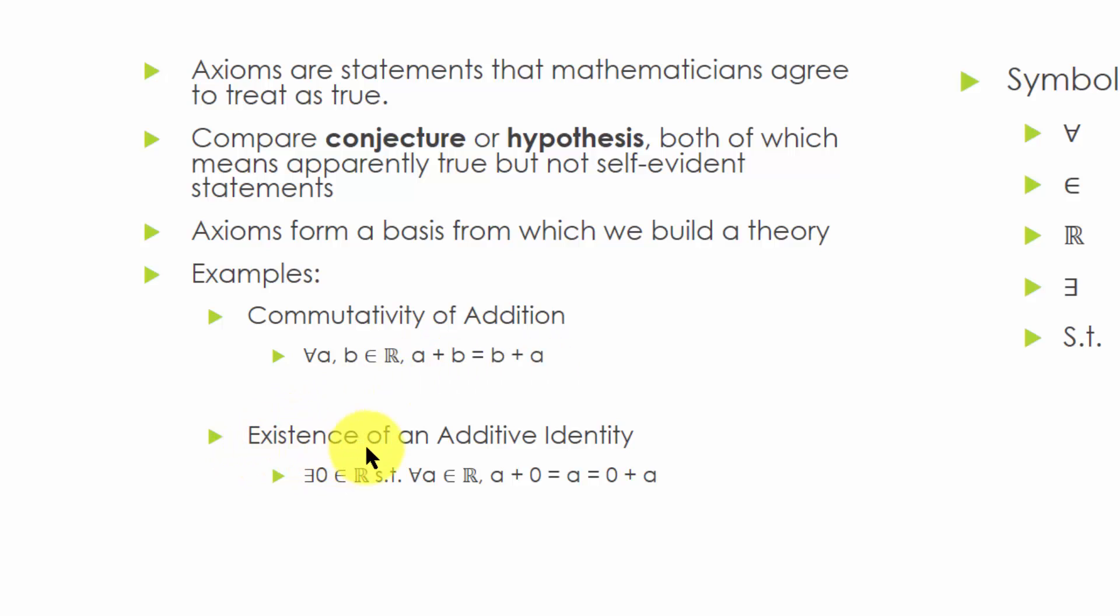The axiom of existence of an additive identity states that there exists a number 0 in the reals, such that for all a in the reals, a plus 0 equals a equals 0 plus a.